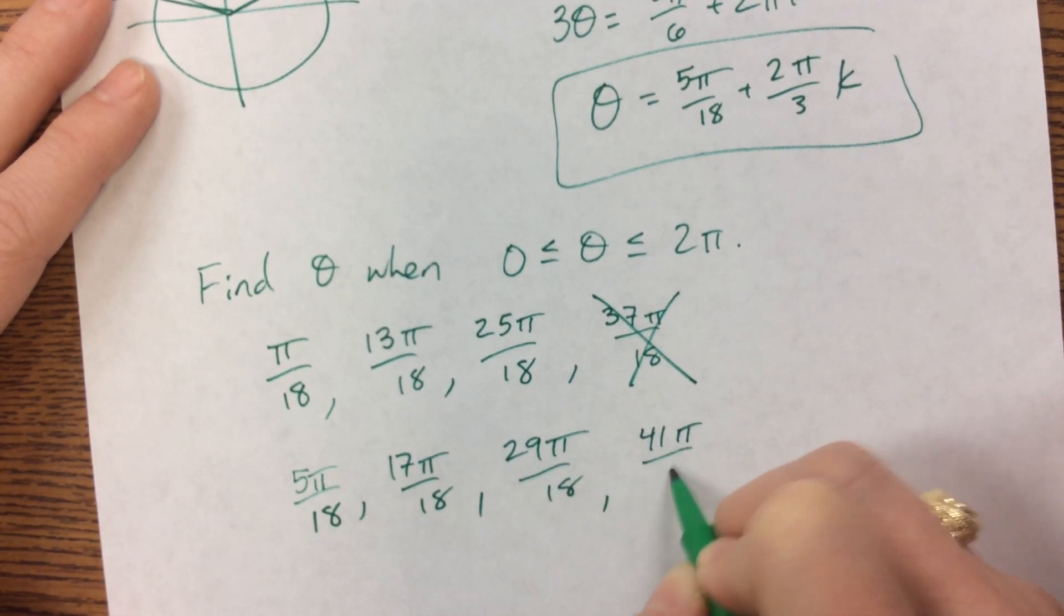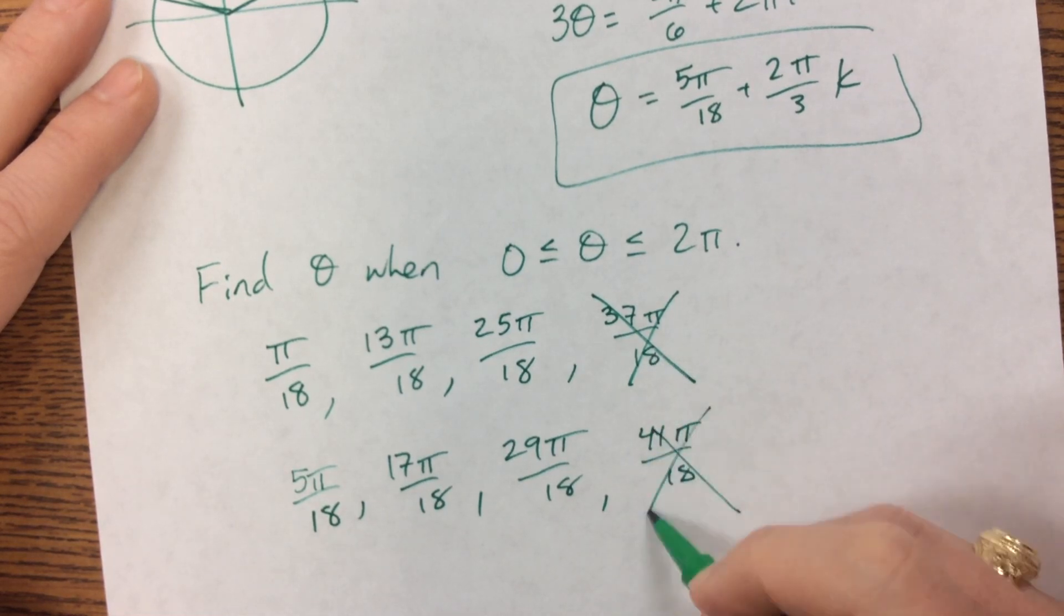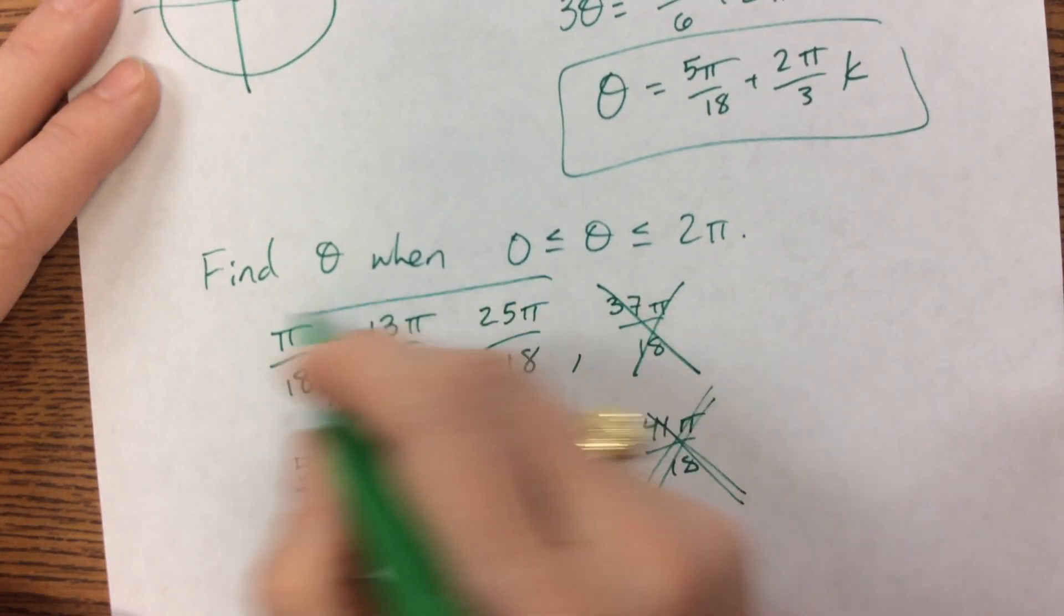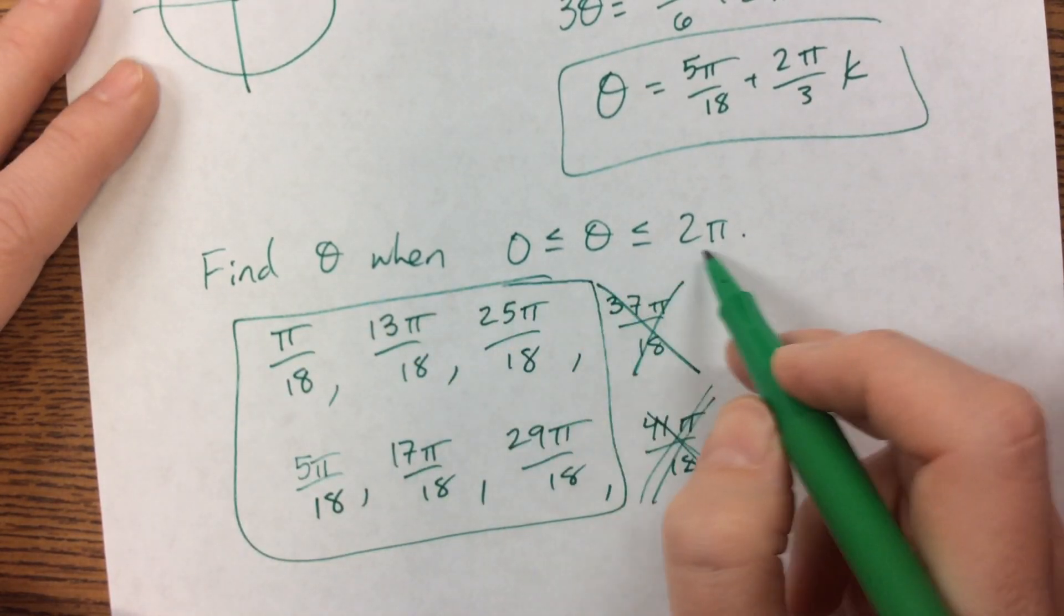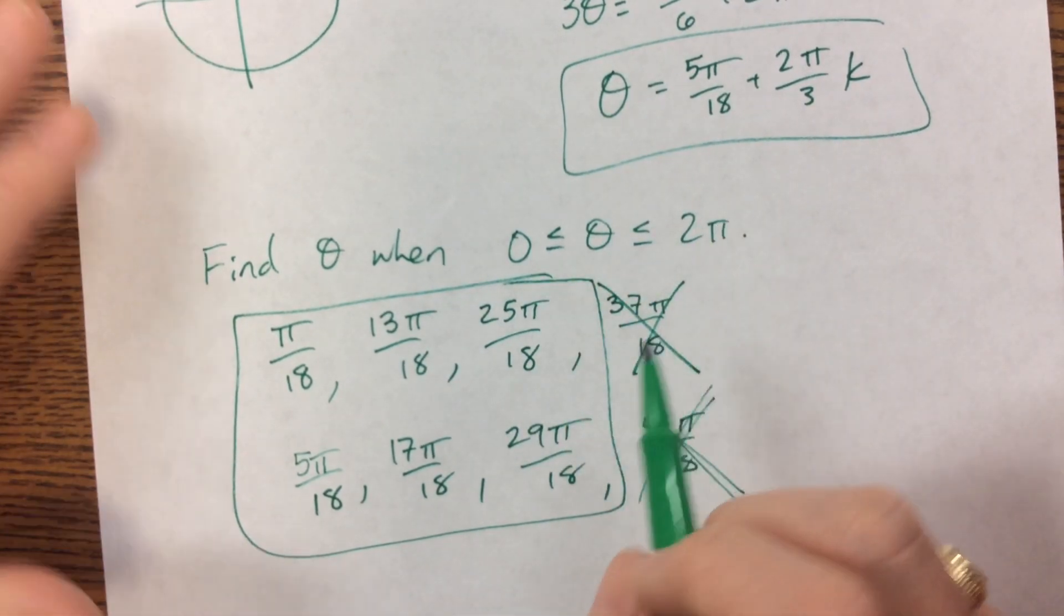Well, if 37 was too big, you know that 41 is too big. And this does give us the six expected answers between 0 and 2 pi.